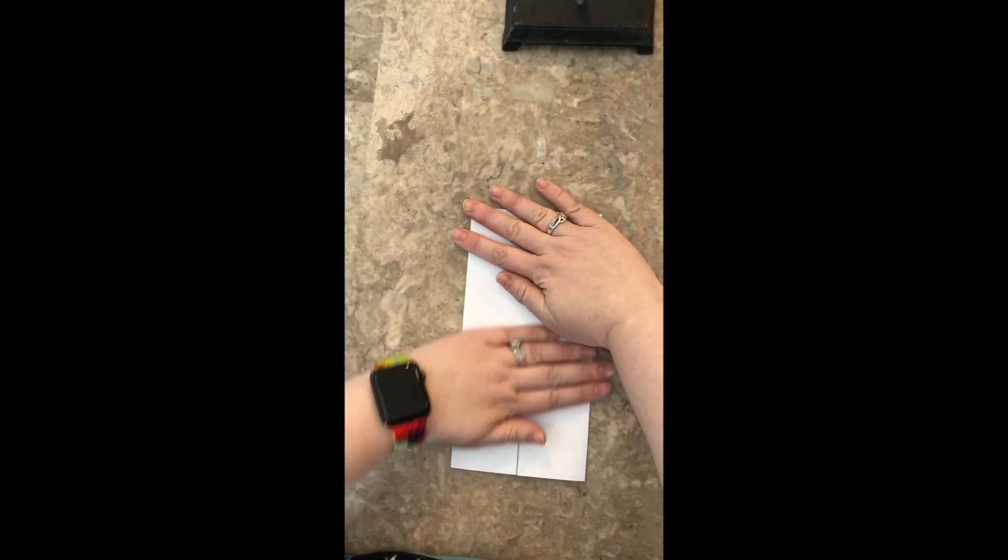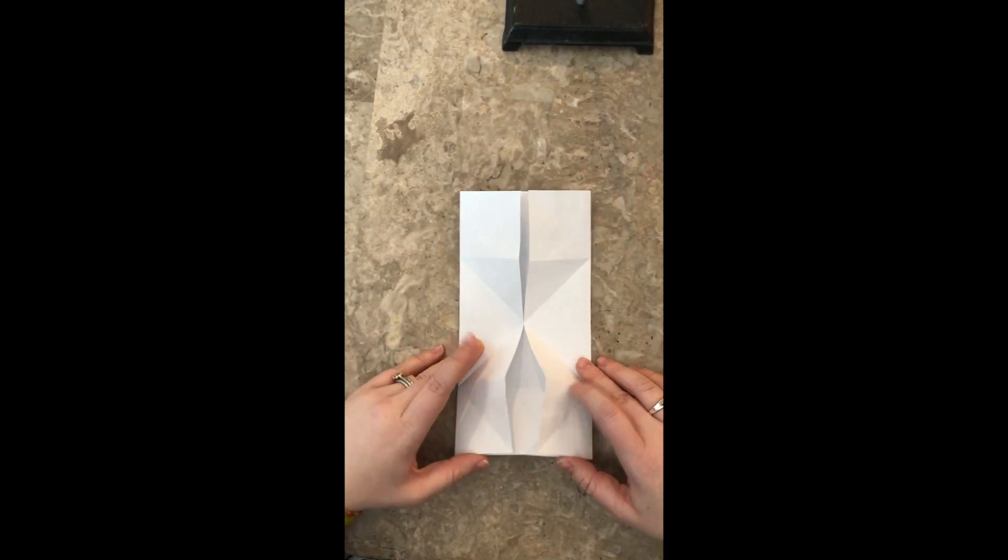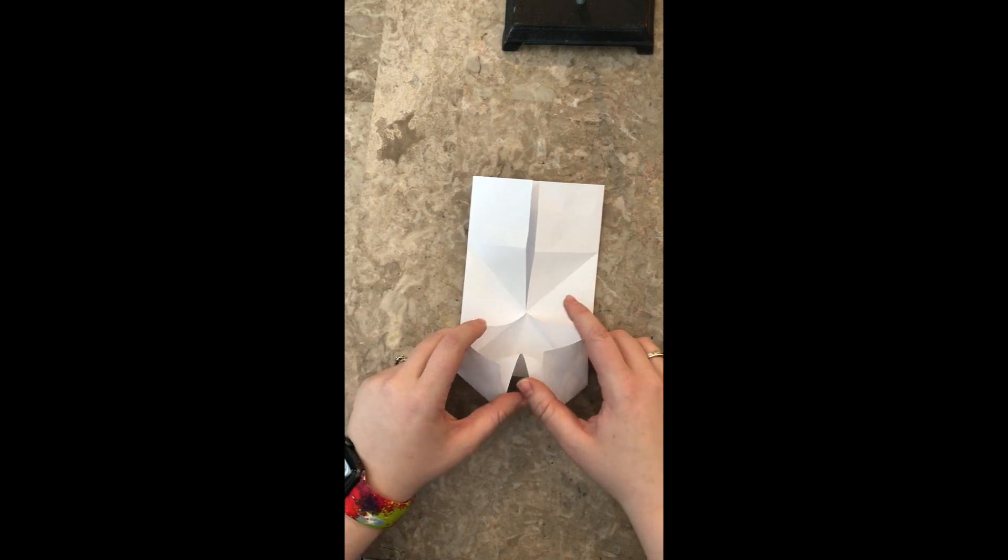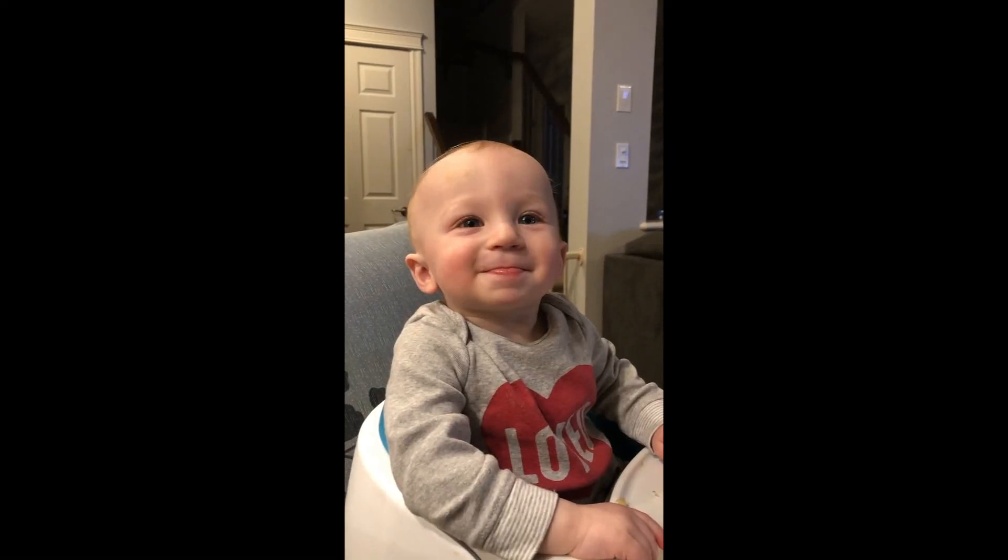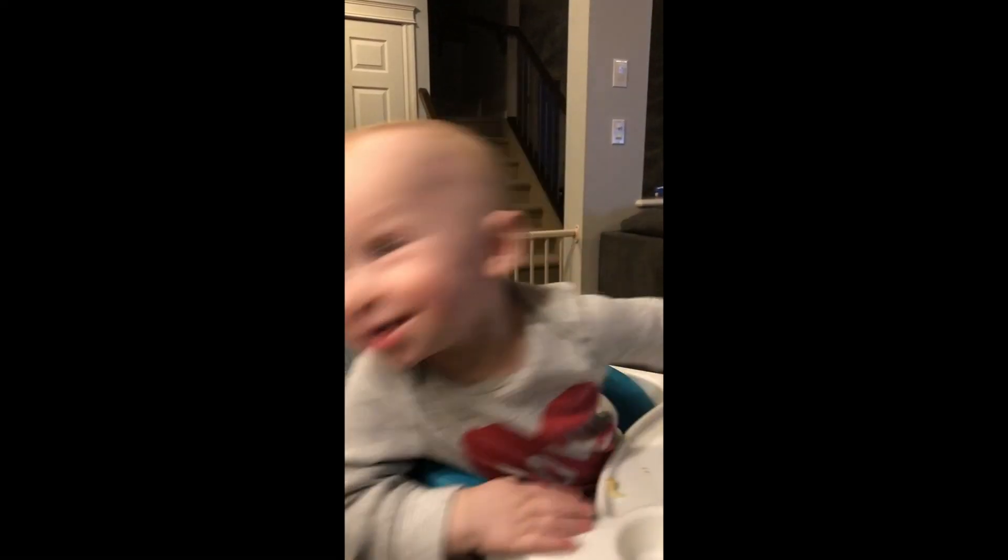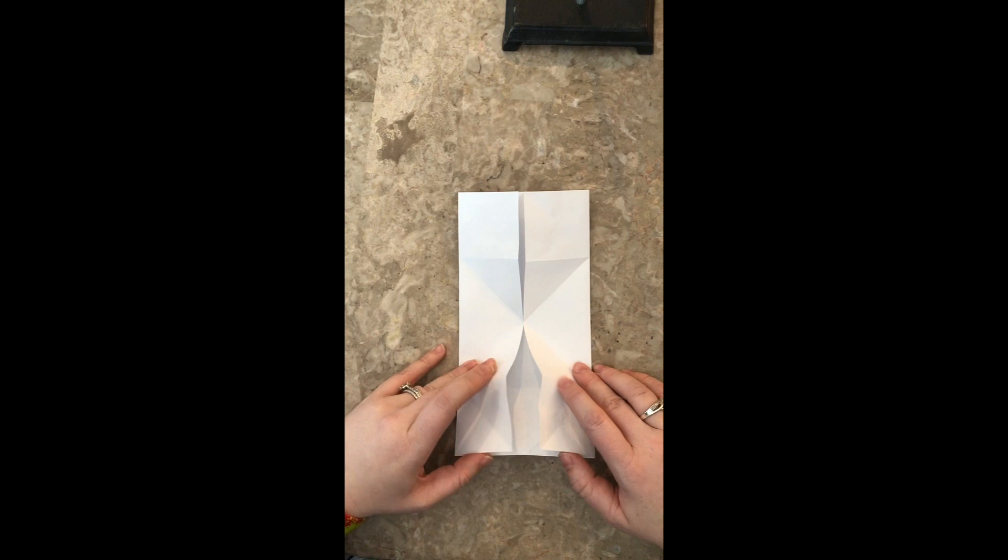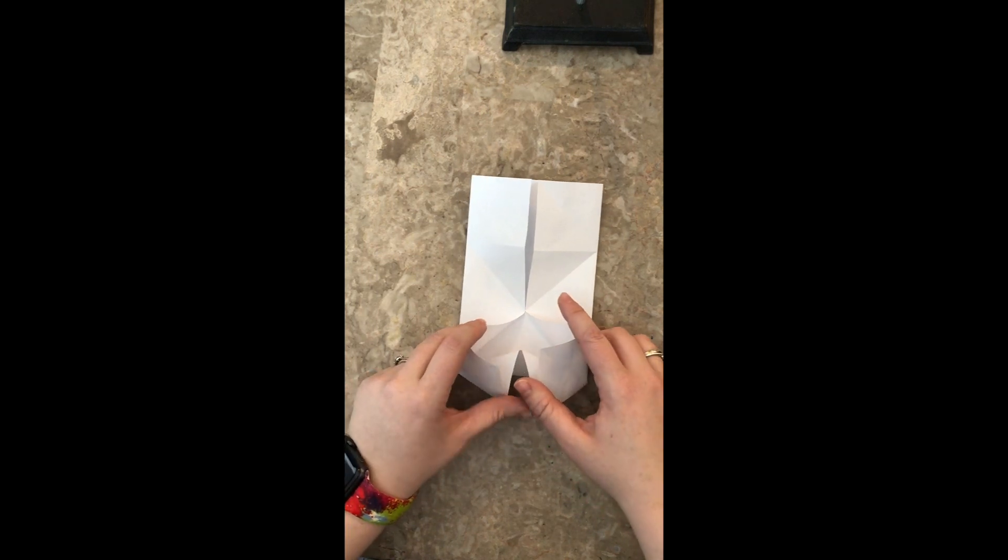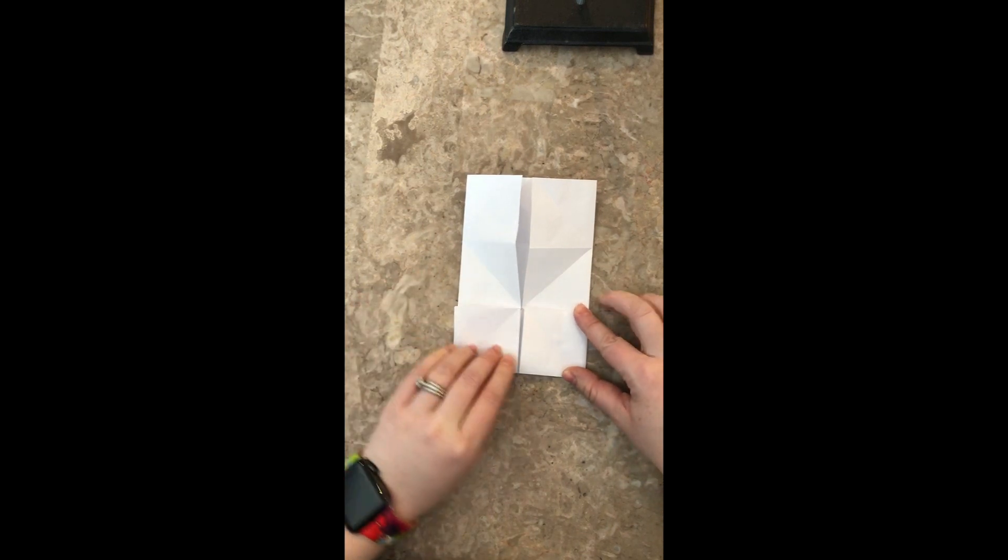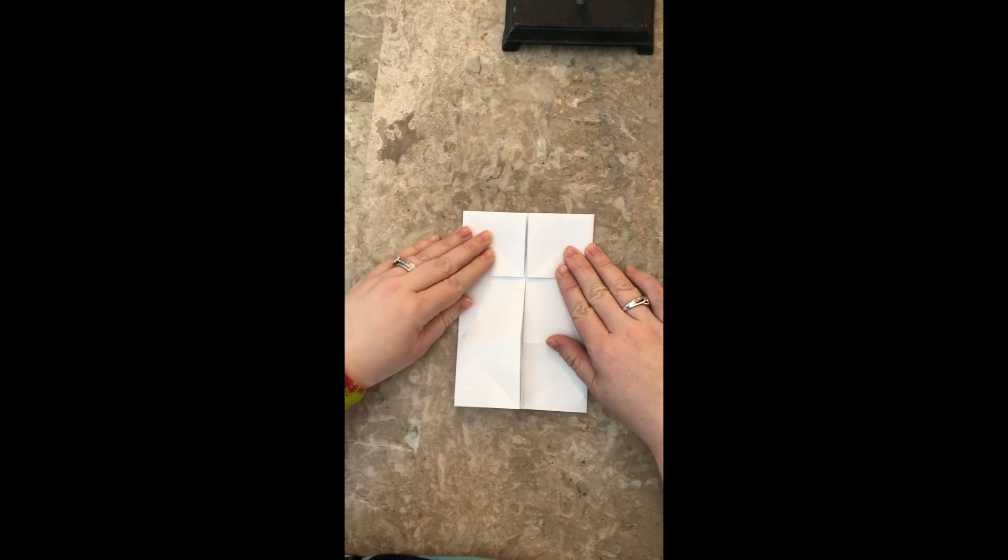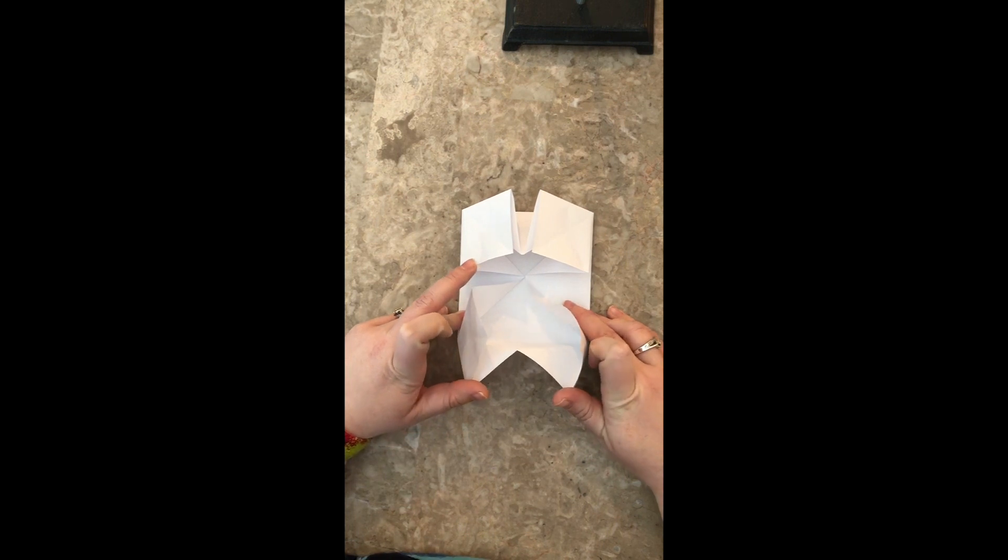Alrighty. So I fold two edges towards each other to make a long rectangle. Now this is the trickiest part, so watch carefully. Did you get that? Let's watch it again. Perfect. Now that we figured that fold out, we're going to turn our paper around and do the exact same thing on the other side.